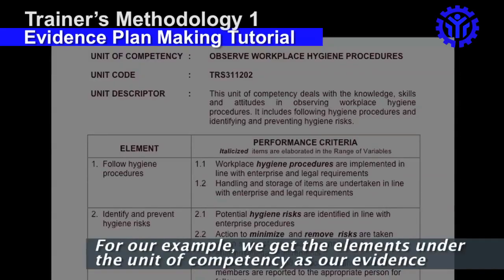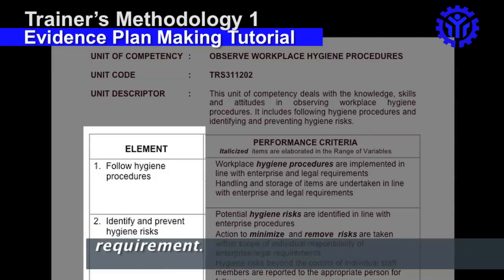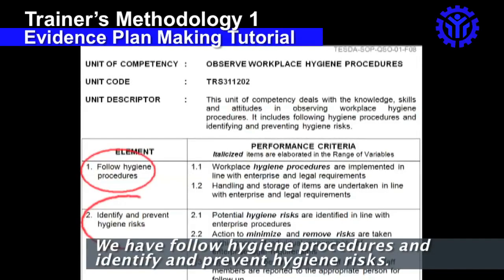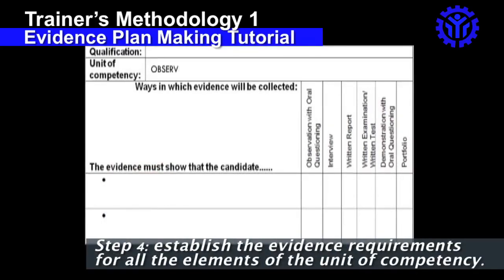For our example, we get the elements under the Unit of Competency as our evidence requirement. We have 'Follow Hygiene Procedures' and 'Identify and Prevent Hygiene Risk.' Step 4.